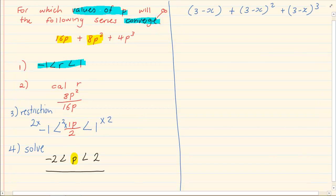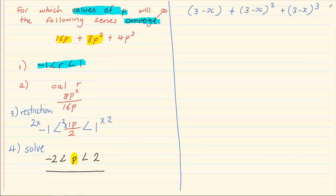Again, what they are going to ask for is for which values of x will the series converge? Again, when you start, the first thing you write down is your restriction: r must lie between minus 1 and 1. In the matric exam, just for writing that, you are usually allocated 1 mark.